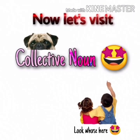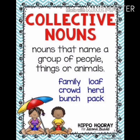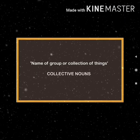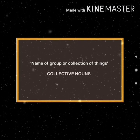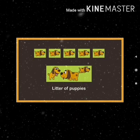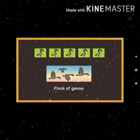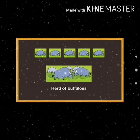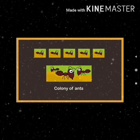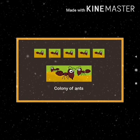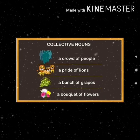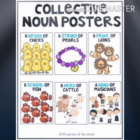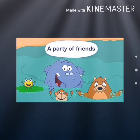Now let us visit collective nouns. Collective nouns are nouns that name a group of people, things, or animals. Some examples: a litter of puppies, a flock of geese, a herd of buffaloes, a colony of ants, and a party of friends like us.